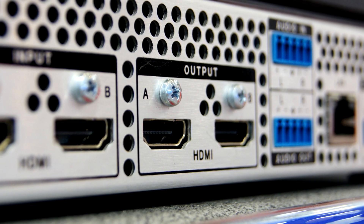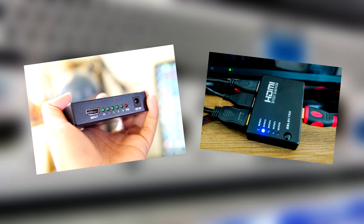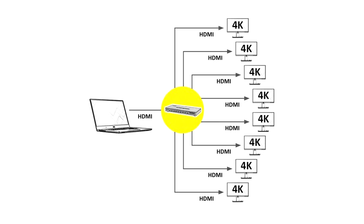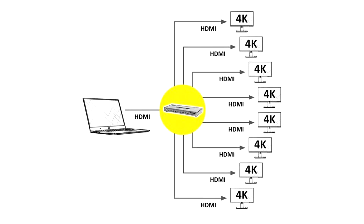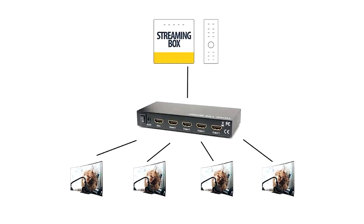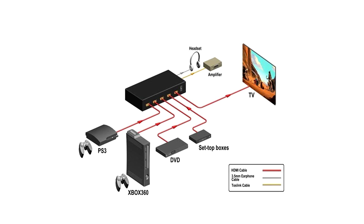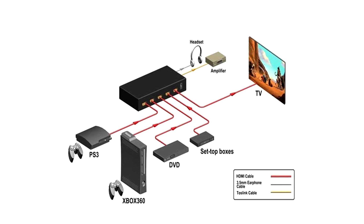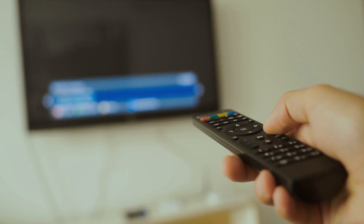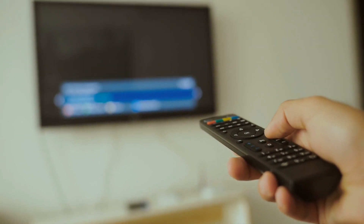Firstly, we need to understand the difference between a HDMI splitter and a HDMI switch. A splitter will take the input signal, for example your computer, and split it into multiple outputs, enabling you to show the same image on various screens. A switch allows you to have various inputs, for example your computer and your games console, going to one output, enabling you to switch between the two without having to plug and unplug any cables.